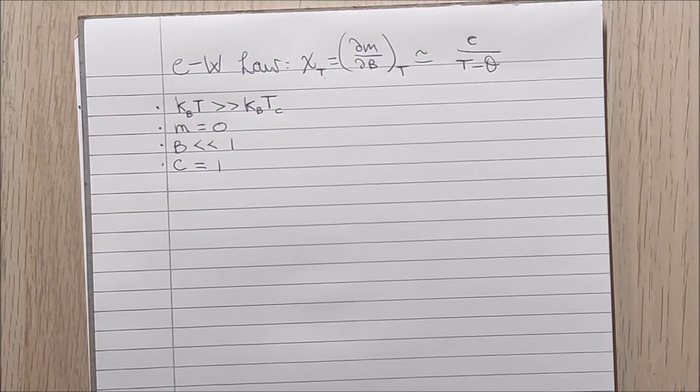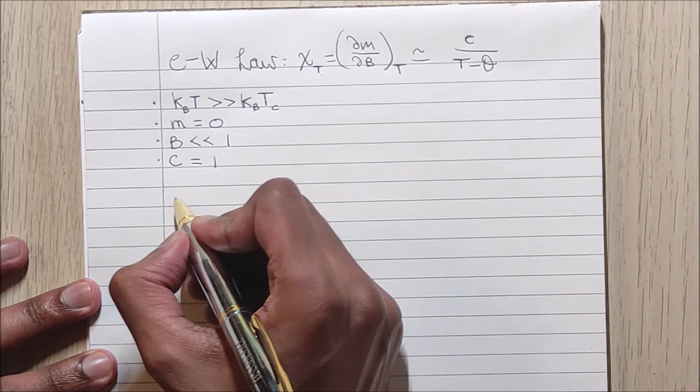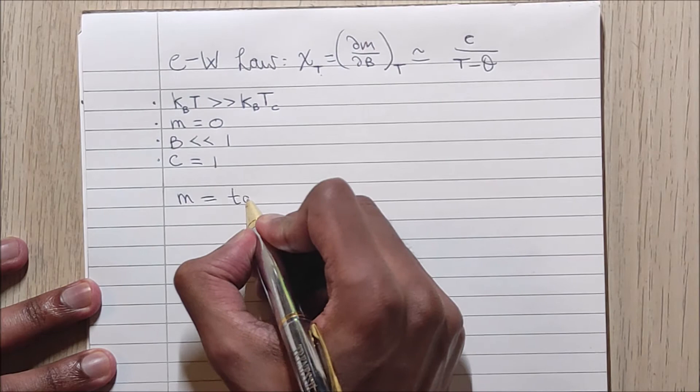From the mean field approximation, we can derive the transcendental equation which governs the average magnetization of the system.